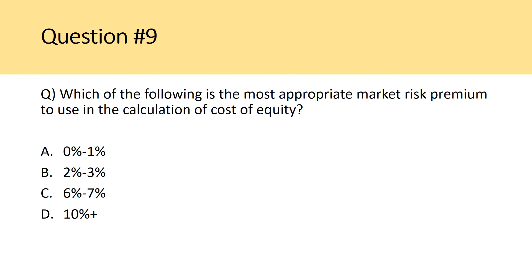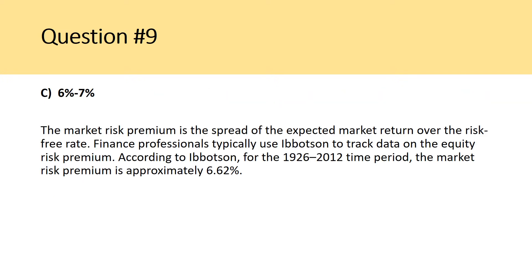Question nine: which is the most appropriate market risk premium to use in the calculation of cost of equity? The answer is C, 6% to 7%. The market risk premium is the spread of the expected market return over the risk-free rate. Finance professionals typically use the Ibbotson data on the equity risk premium. According to Ibbotson, for the 1926 to 2012 time period, the market risk premium is approximately 6.62%. This is used in the capital asset pricing model to determine the cost of equity and ultimately the weighted average cost of capital, which we use to discount free cash flows.